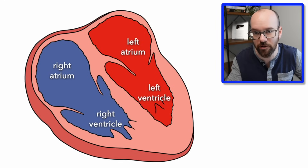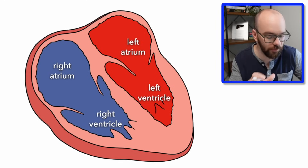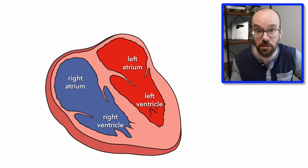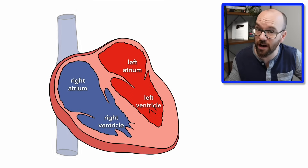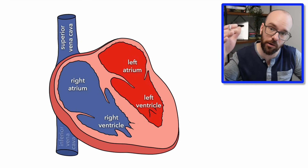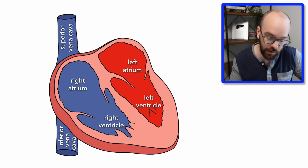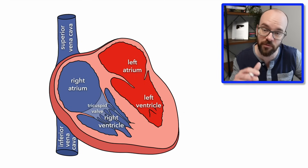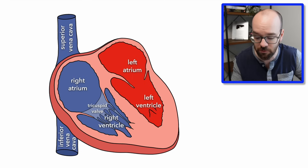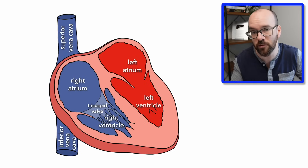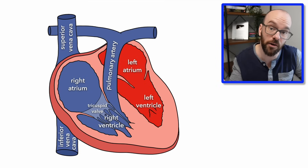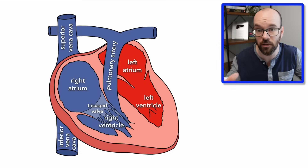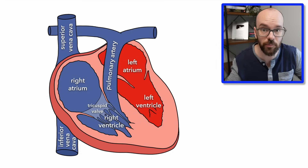Our blood is always red, never blue — that's just the colors we use in diagrams. Blood comes into the right side through the superior and inferior vena cava into the right atrium, passes through the tricuspid valve into the right ventricle, and the right ventricle pumps it out through the pulmonary artery to the lungs to receive oxygen.